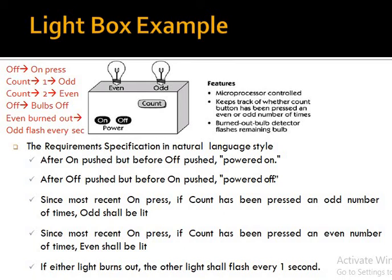If we represent these requirements in natural language, looking at the light box features: it is microprocessor-controlled. The microprocessor has embedded logic for on and off, and it keeps track of whether the count button has been pressed an even or odd number of times. A burned-out bulb detector flashes the remaining bulb. In natural language: after on is pushed but before off is pushed, the system is powered on. After off is pushed but before on is pushed, the system is off. Since the most recent on press, if the count button has been pressed an odd number of times, the odd light should be lit; if an even number of times, the even light should be lit. If even light burns out, the odd light will flash every one second, and similarly if odd light burns out, the even light flashes every one second.